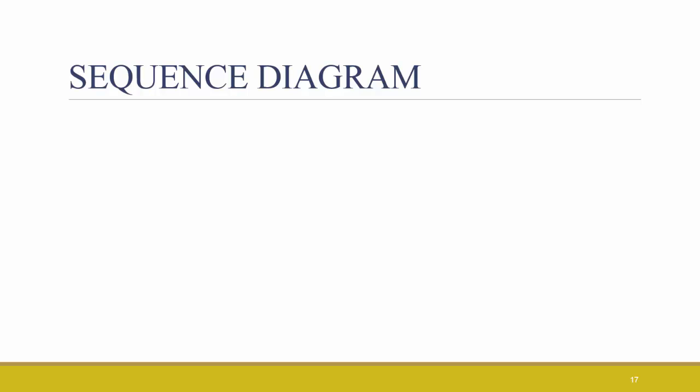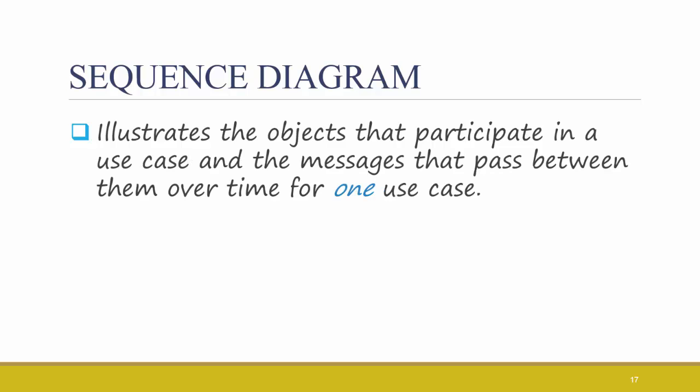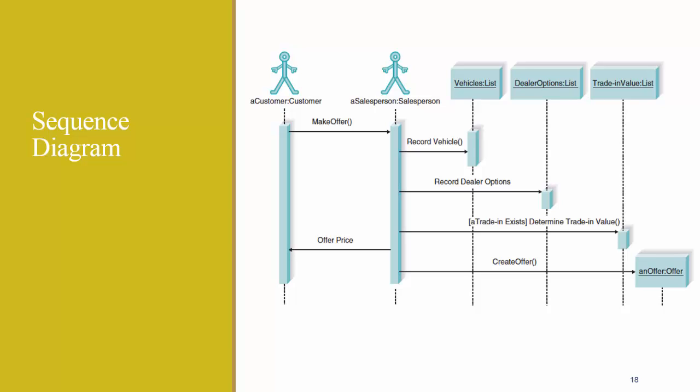Next, we have a sequence diagram. A sequence diagram illustrates the objects that participate in a use case, and the messages that pass between them over time for one use case. I don't expect you for this class to know exactly what everything on this sequence diagram means. You should just know that one sequence diagram corresponds to one use case from your use case diagram, and it gives more detail about it. Again, this class won't cover the behavioral state machine diagram, but I highly encourage you, if you're interested, to consult the textbook for more information about it.